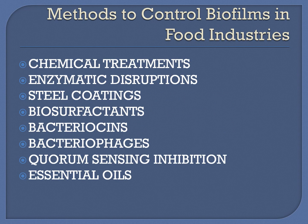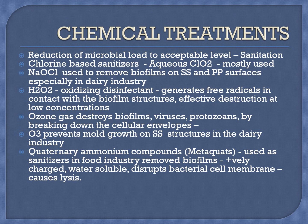Having looked at the pathogens and factors promoting biofilm formation, we now need to understand methods to control biofilms in the food industry. The traditional method is chemical treatment, but there are also newer approaches such as enzymatic disruption, steel coatings, biosurfactants, bacteriocins, bacteriophages, quorum sensing inhibition, and essential oils. Chemical treatment remains the most common method.